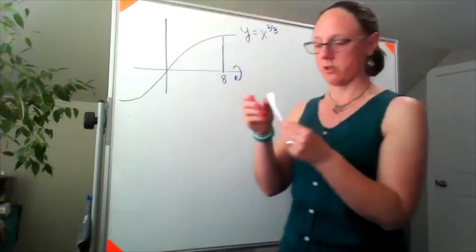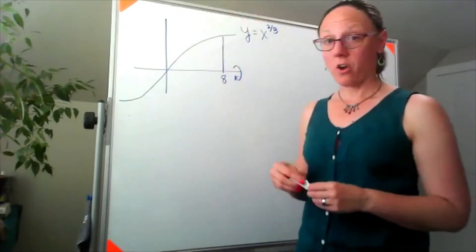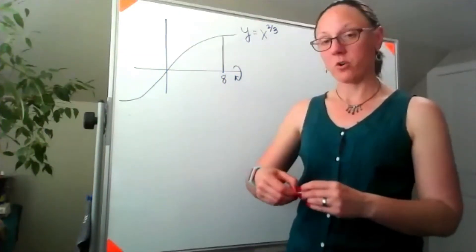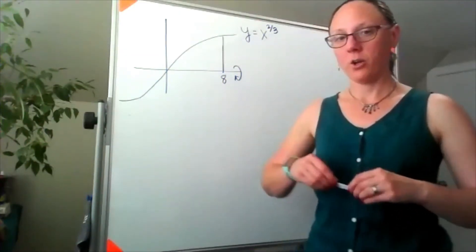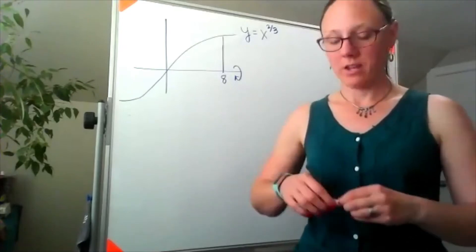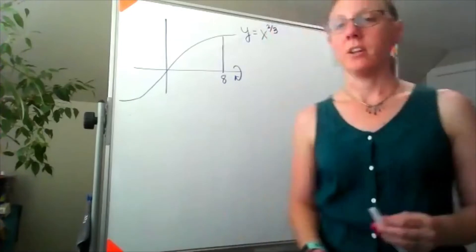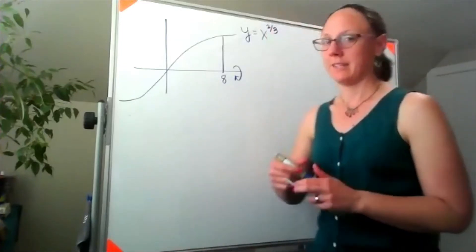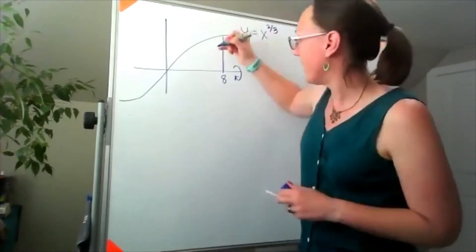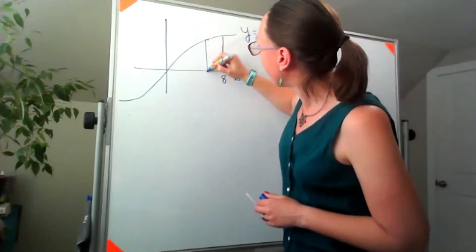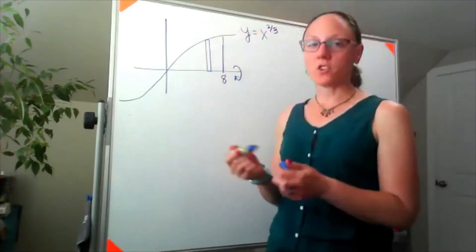Back to my low-budget visual aids. We need to know what shape the cross sections are when we spin this around. For volumes of revolution, our cross sections are always the same kind.